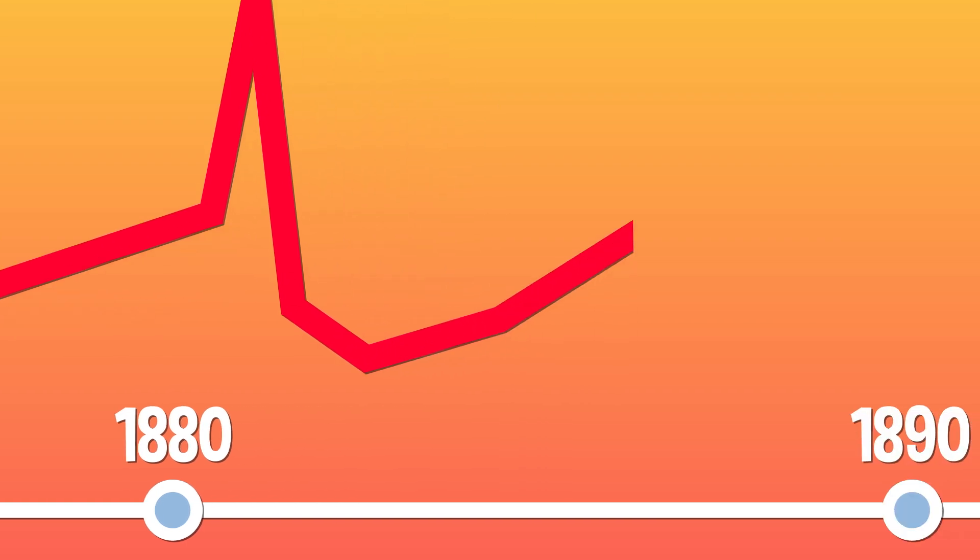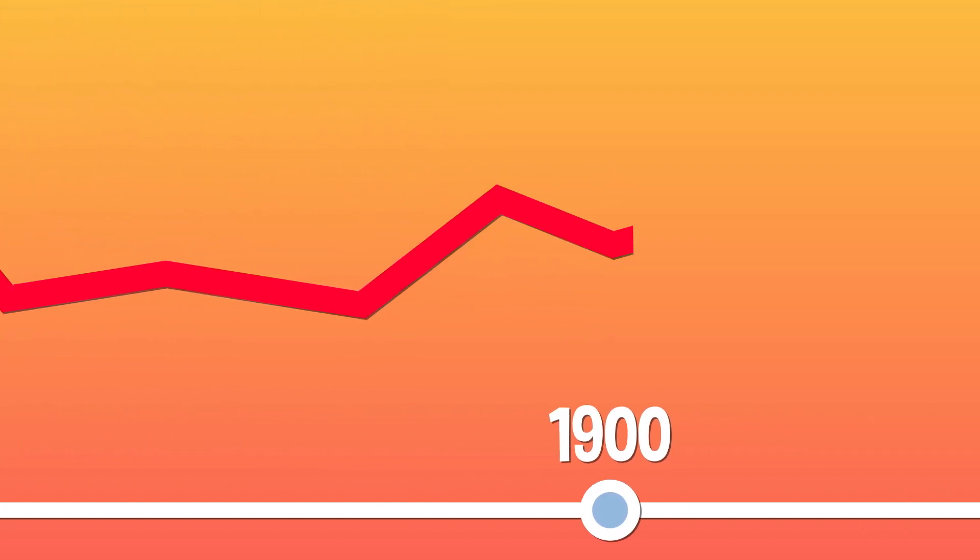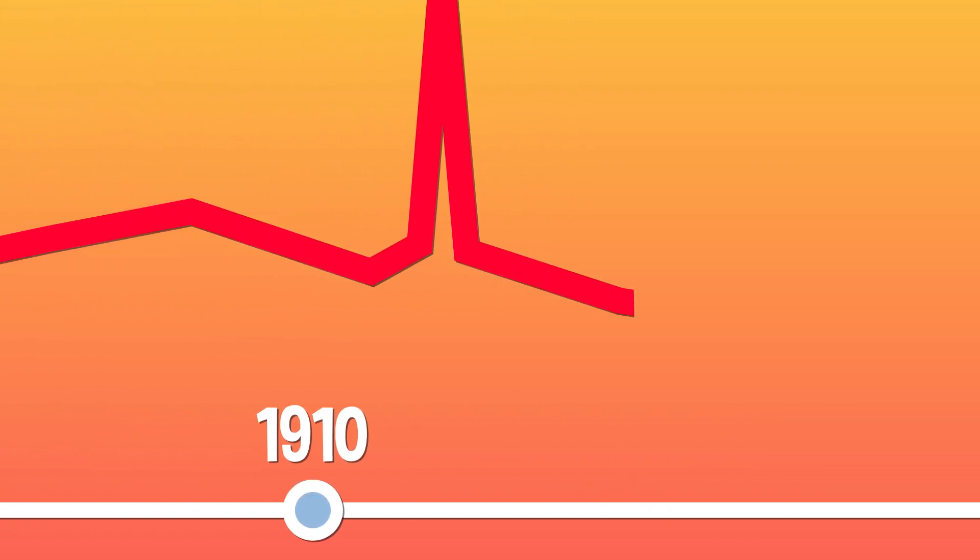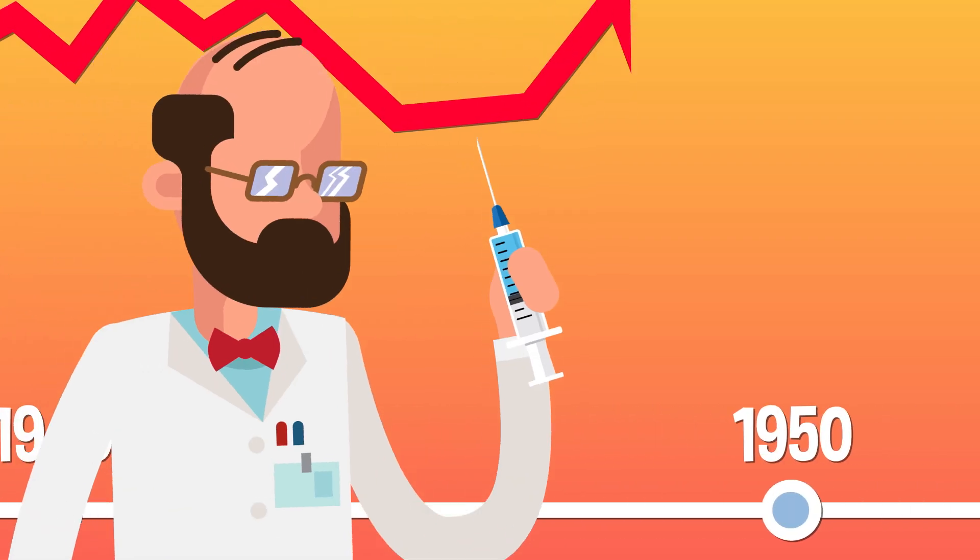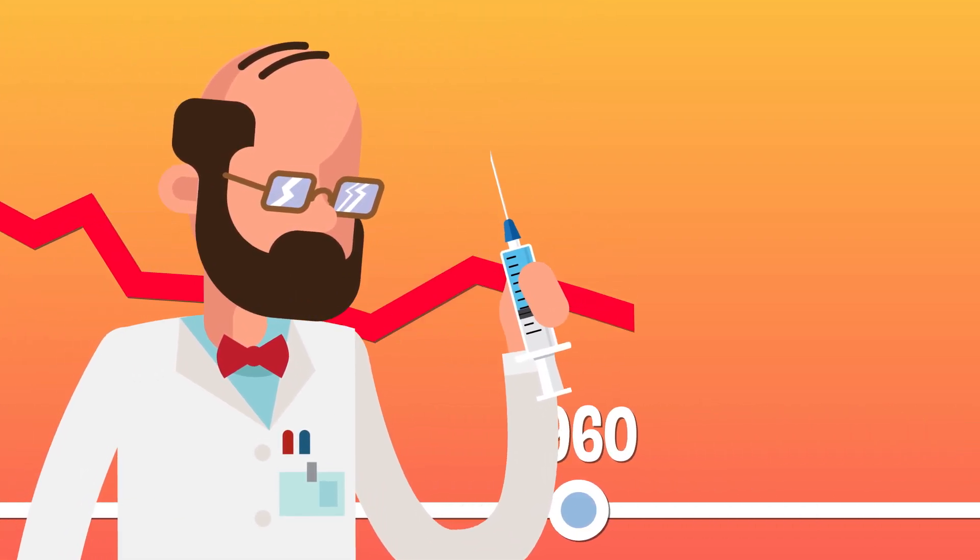Take polio, for example. This infectious disease caused multiple epidemics in the U.S. alone between the late 1800s and the 1940s, when a vaccine was more widely available in the country.